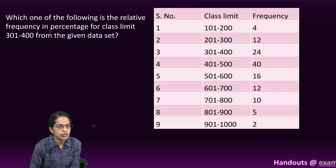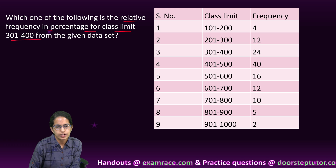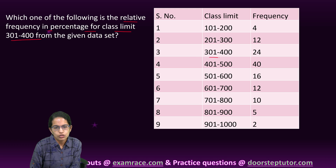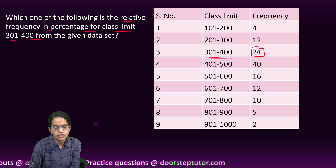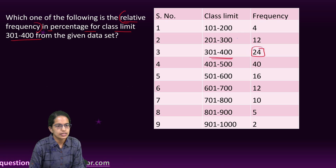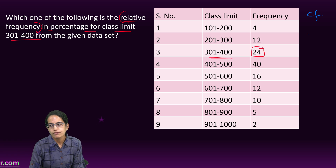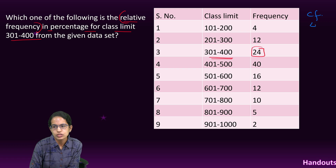The first question: which one of the following is the relative frequency in percentage for the class limit 301 to 400? So 301 to 400 has a frequency of 24. The question asks about relative frequency. To calculate relative frequency, first find the cumulative frequency.